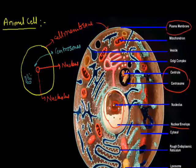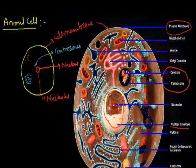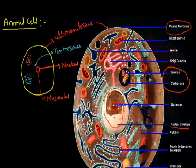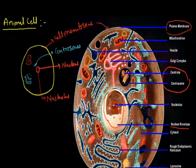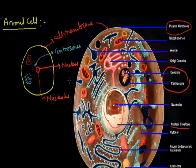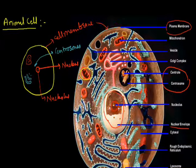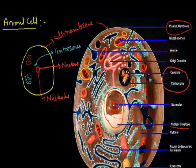Another structure, the mitochondria, is also present in the animal cell. This structure is known as the mitochondria in this diagram. The number of mitochondria depends on the activity of the cell. Mitochondria are responsible for energy production inside the cell.